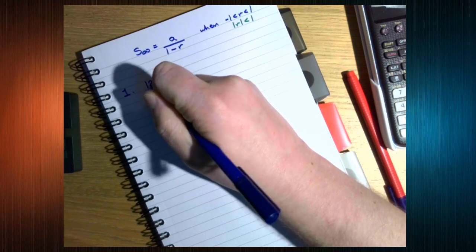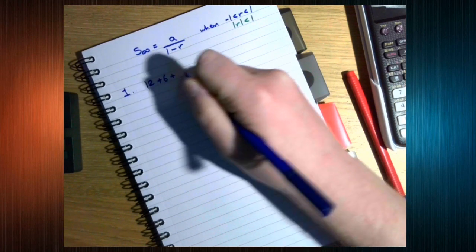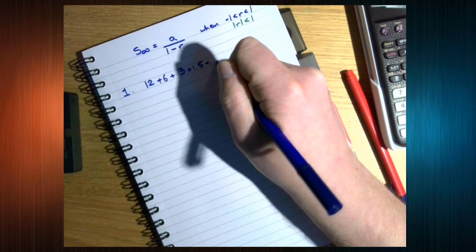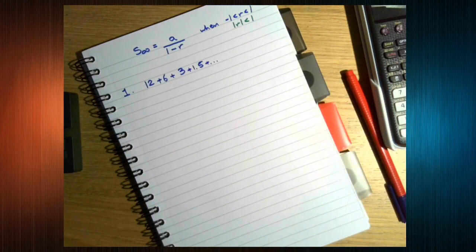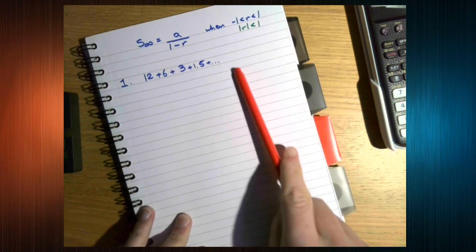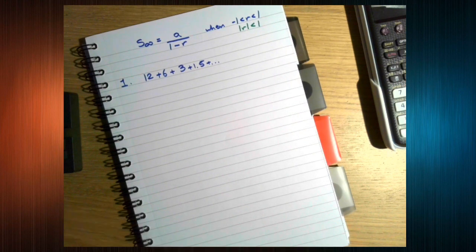So, we have the series 12, plus 6, plus 3, plus 1.5, and so on. This is an infinite series, and it's converging. You can see each term is getting closer and closer to zero, so the total is getting closer and closer to something.